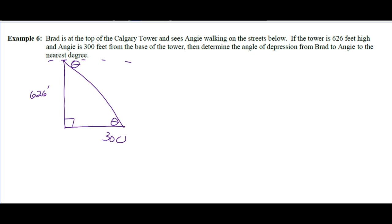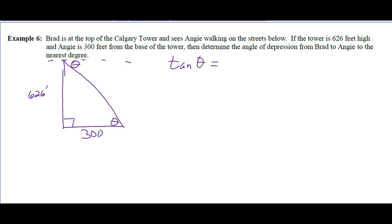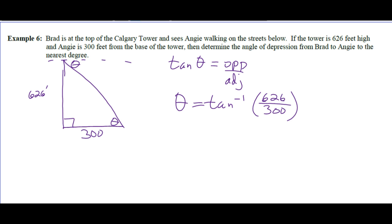By parallel lines and the transversal, these angles are the same. So all we need to work out is the angle of elevation — that will give us the angle of depression. The tower stands at 90 degrees; 626 is opposite and 300 is adjacent. We're going to use the tan ratio. Theta is the inverse tan of 626 divided by 300, which is 64 degrees. Make sure you're reading whether it says to the nearest degree or nearest tenth.